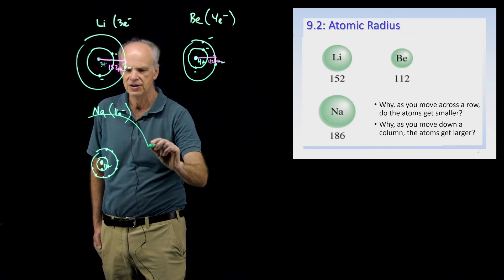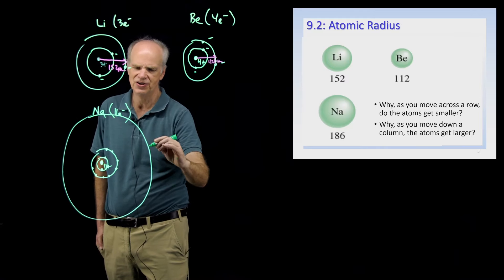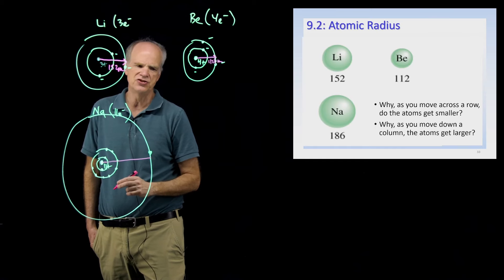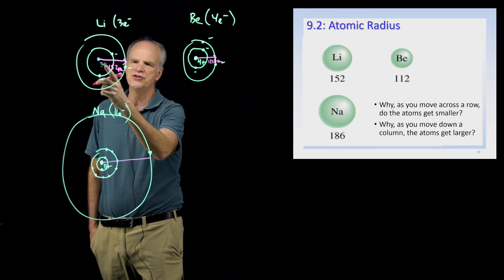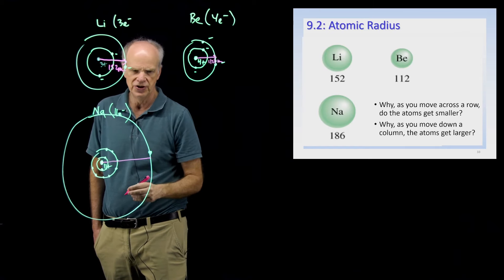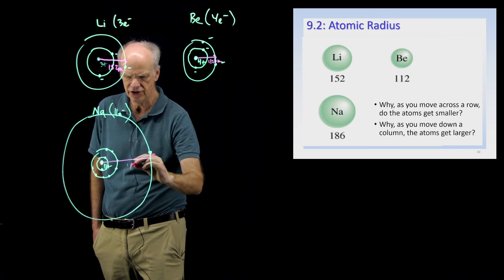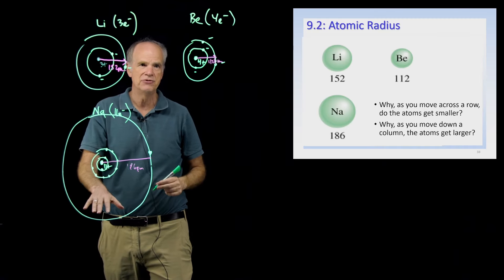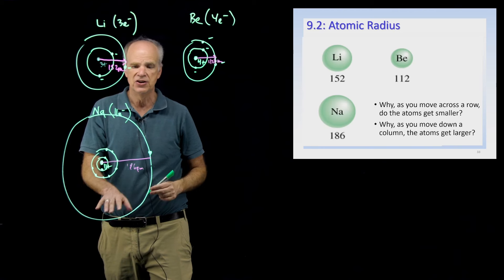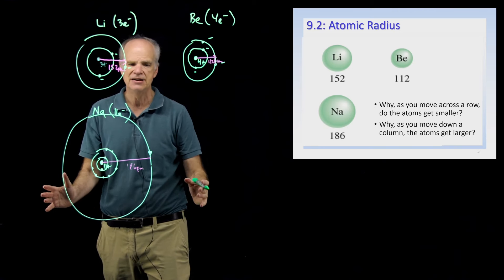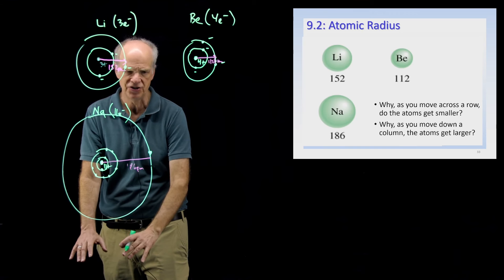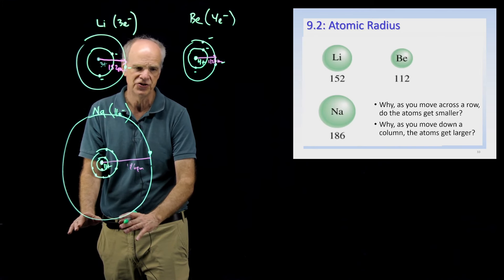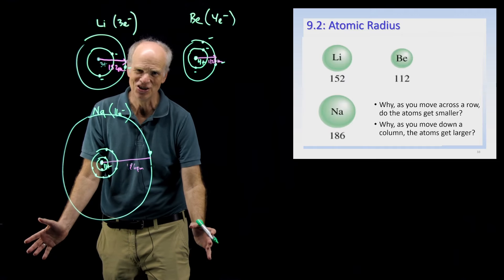The distance from the nucleus to the edge of the third energy level is much greater than the distance from the nucleus to the edge of the second energy level of lithium. Sodium's radius is 186 picometers. The reason why atoms get larger and larger as you go down a group is because as you go down, you're adding another energy level. When you go down to potassium, which is below sodium and has 19 electrons, you need a fourth energy level, making it even larger.